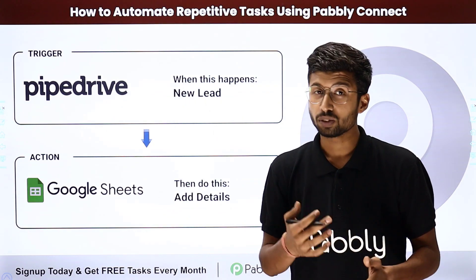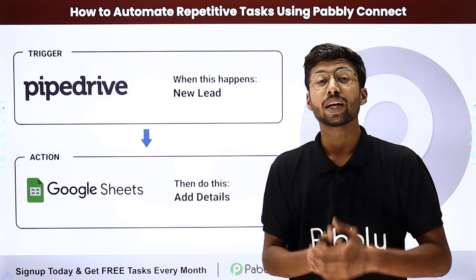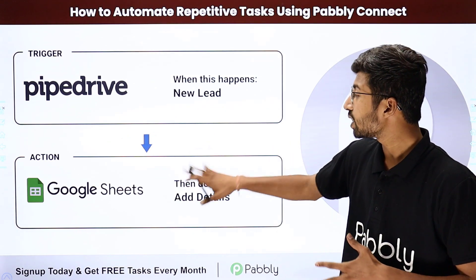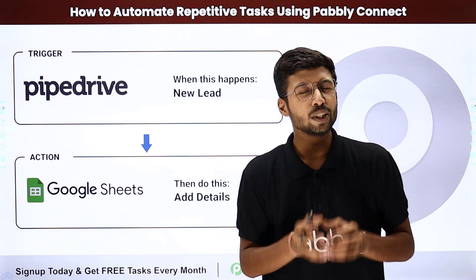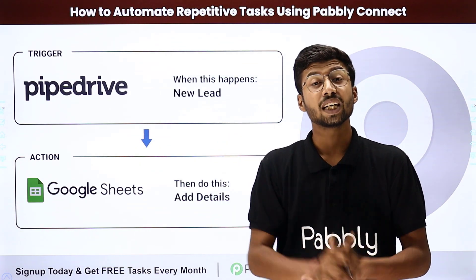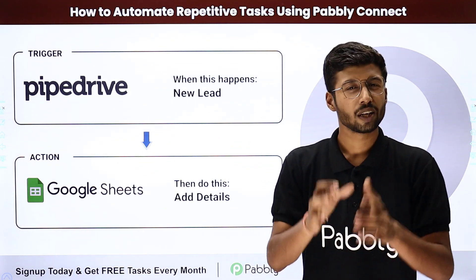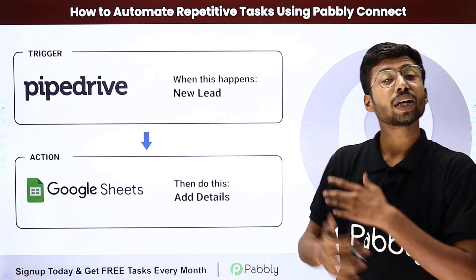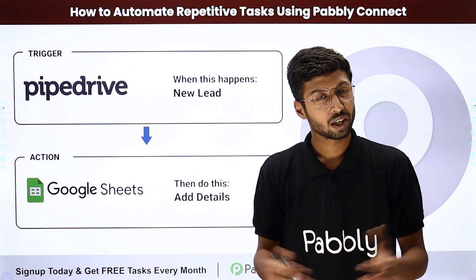How does automation work? Let's take a simple example. Suppose you are using a CRM application like Pipedrive to get and store your leads, and you also want to add those same leads into a Google Sheet. Till now you are doing this manually — getting new lead details from Pipedrive and manually adding that data into the Google Sheet. Using Pabbly Connect, you can completely automate this process: whenever a new lead is added in Pipedrive, it will automatically be added to your Google Sheet as well.